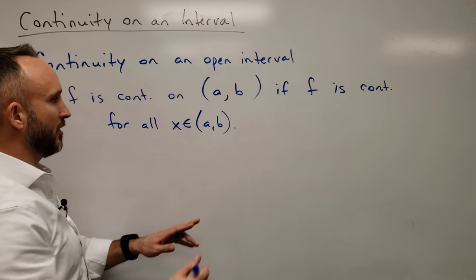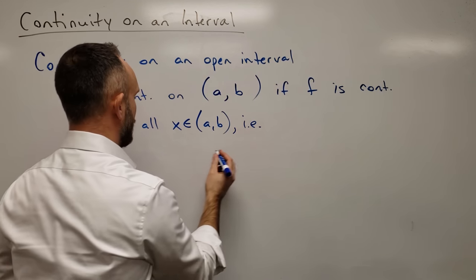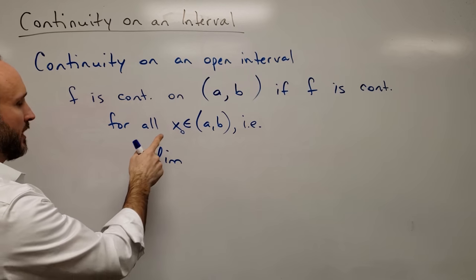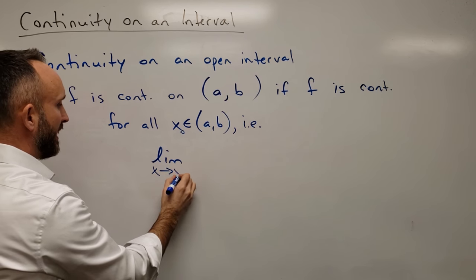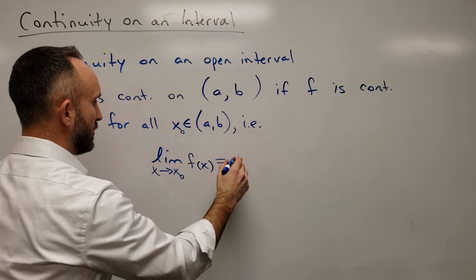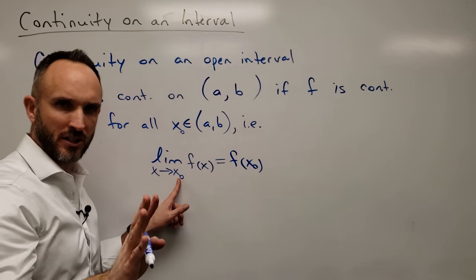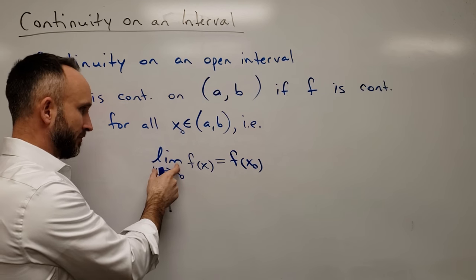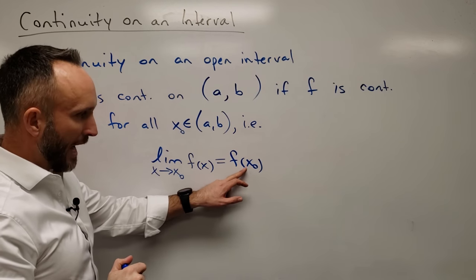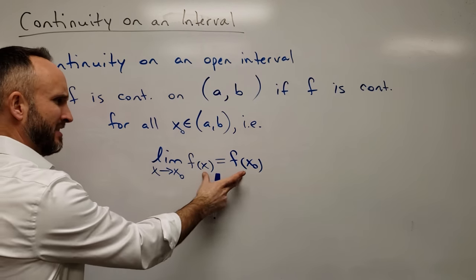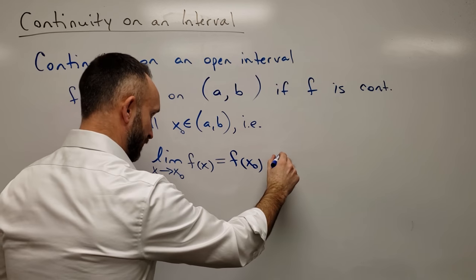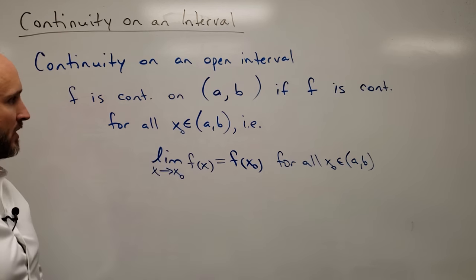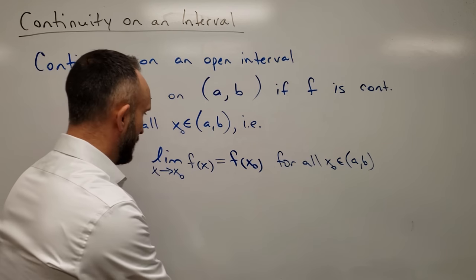In other words, if you pick any value x-naught in the interval, the limit as x approaches x-naught of f(x) should equal f(x-naught). Any constant in this interval — as x gets close to that constant — the limit of the y-values gets close to the output at that constant. This is the definition of continuity at a value, and it should be true for all x-naught in the interval from a to b.